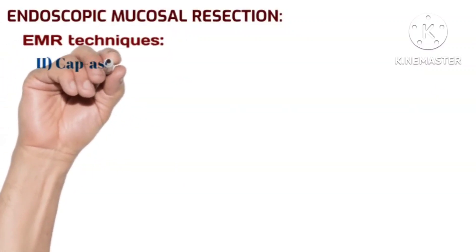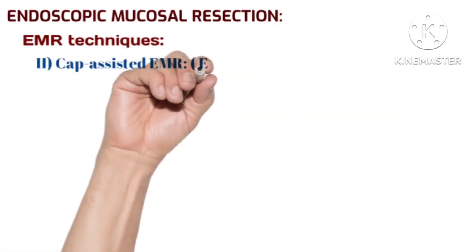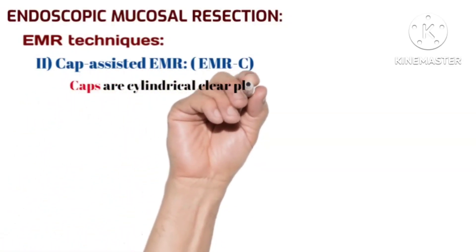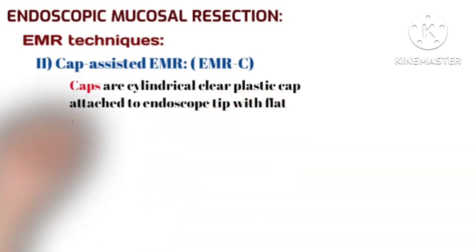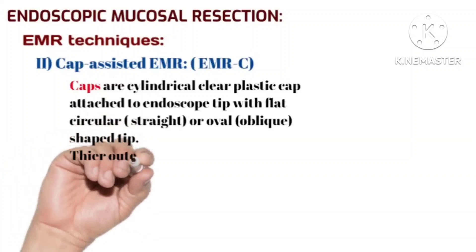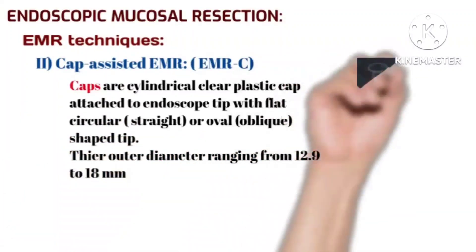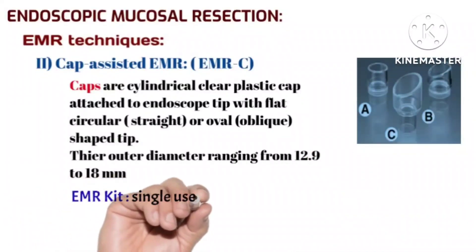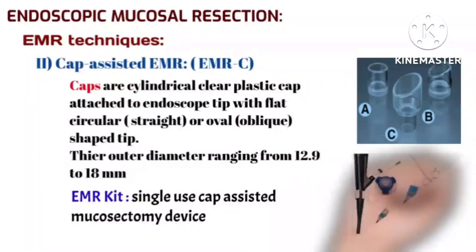Caps are cylindrical clear plastic caps attached to the endoscope tip, with either a flat circular straight end or an oval oblique-shaped tip. Their outer diameter ranges from 12.9 to 18 mm, as shown in the first image. The second image shows the endoscopic mucosal resection kit, which includes a single-use cap-assisted mucosectomy device.